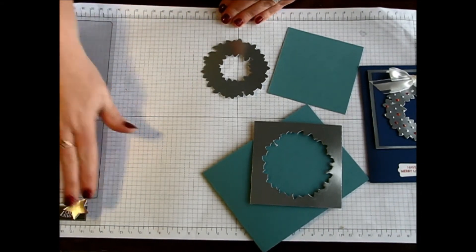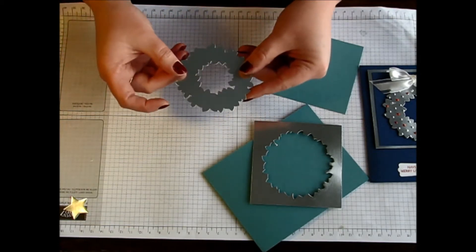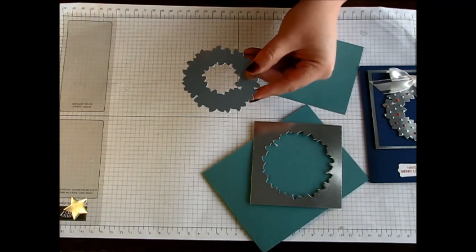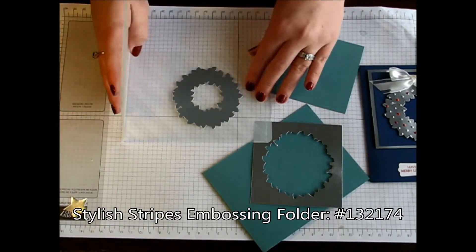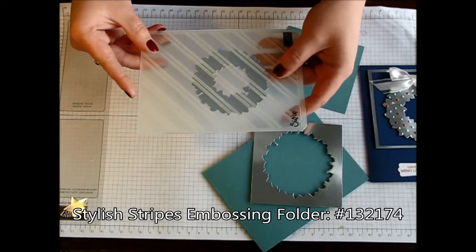So you can always set those aside to use that for a future use. Now for this, I am actually going to take my stripes embossing folder and I am just going to set that inside that. And I am going to run it through my Big Shot.